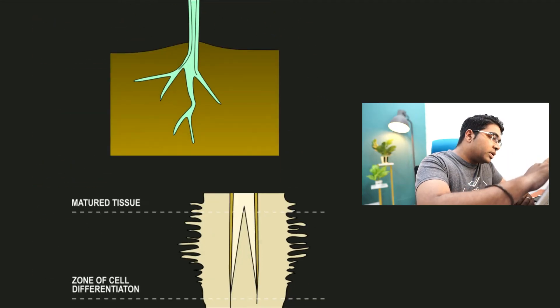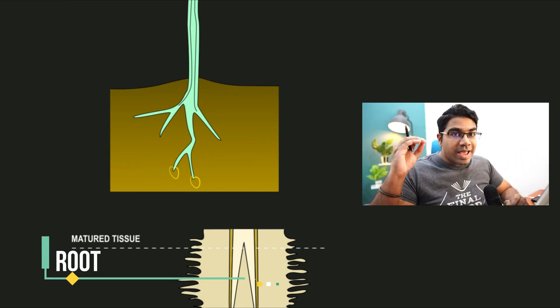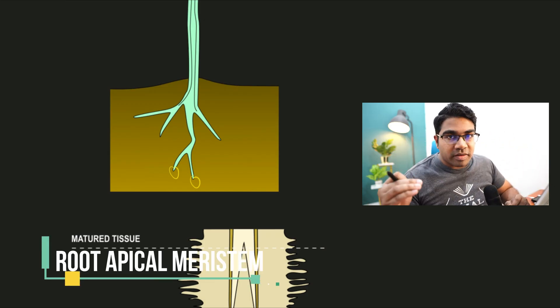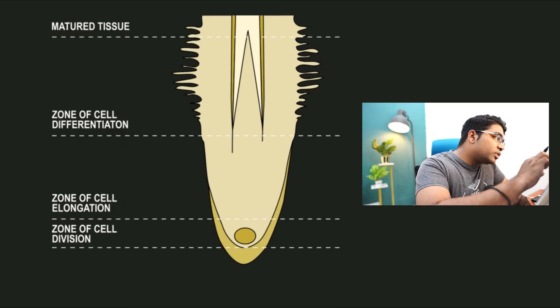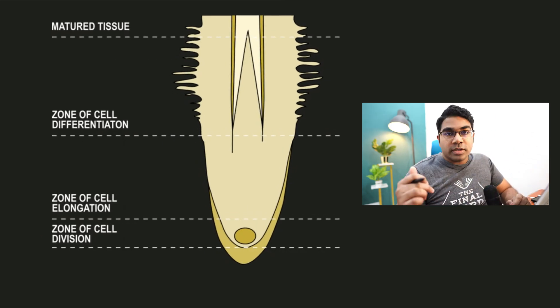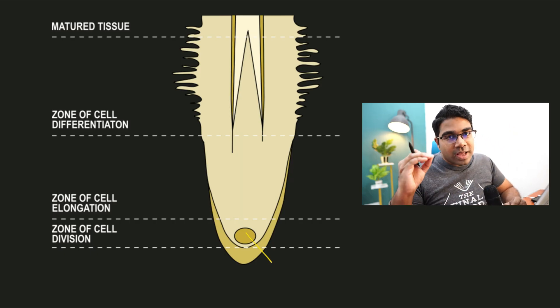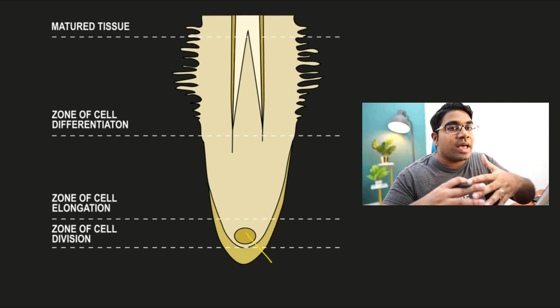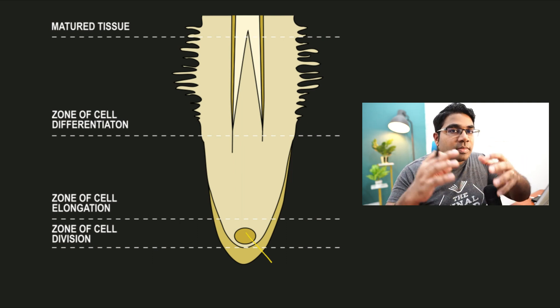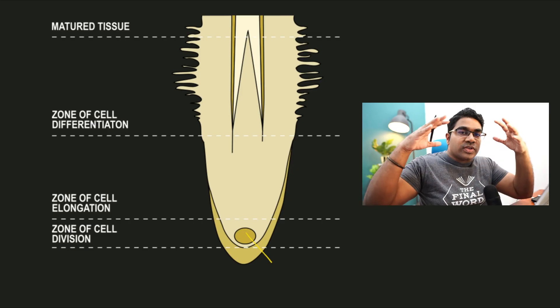This exact same pattern can be seen at the tips of the roots as well. At the root tip we have the root apical meristem. Here you will find the same zones of cell growth — starting with the root apical meristem, where mitosis is taking place actively and cells are dividing, increasing the number of cells.